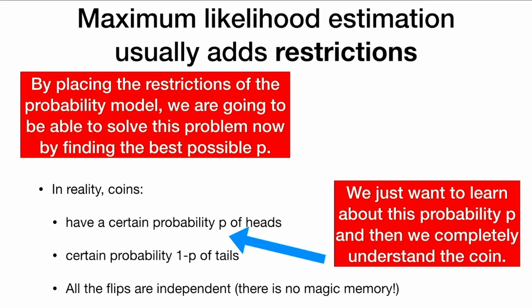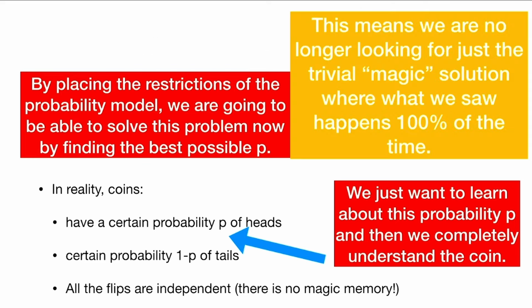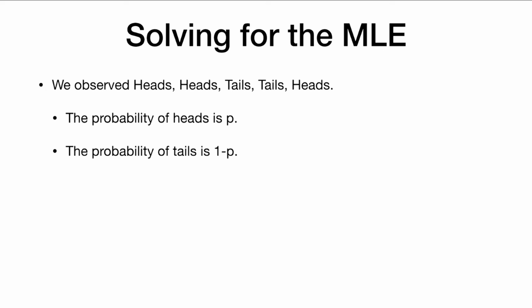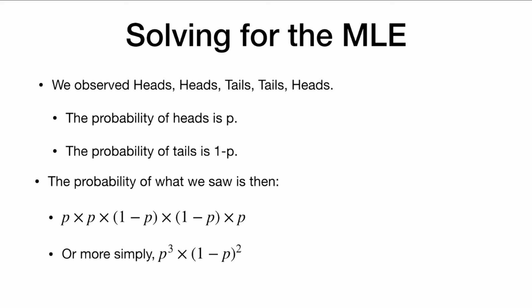So by placing restrictions on the probability model, we are going to be able to solve this problem by finding the best possible p. We are no longer looking for the trivial magic solution. So let's solve for the MLE. We observed heads, heads, tails, tails, heads. The probability of heads is p, the probability of tails is 1 minus p. The probability of observing this sequence is p times p times (1 minus p) times (1 minus p) times p, which simplifies to p cubed times (1 minus p) squared.